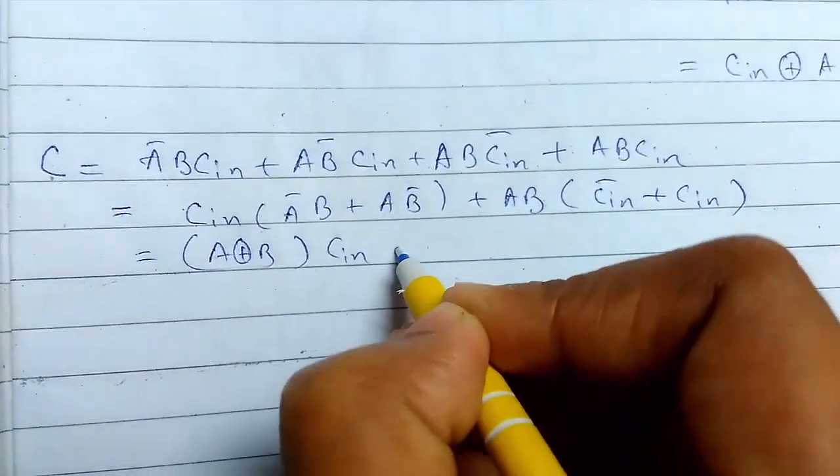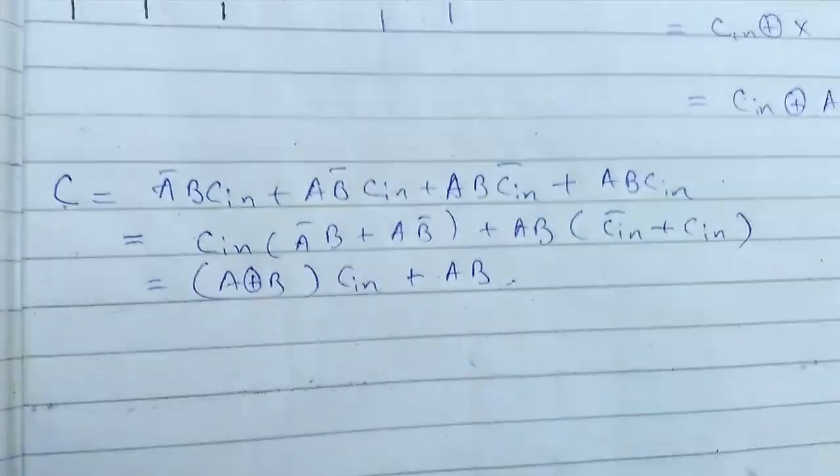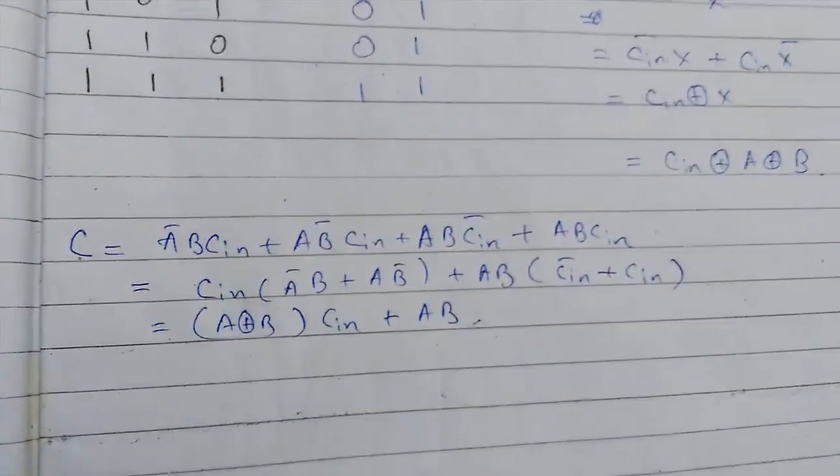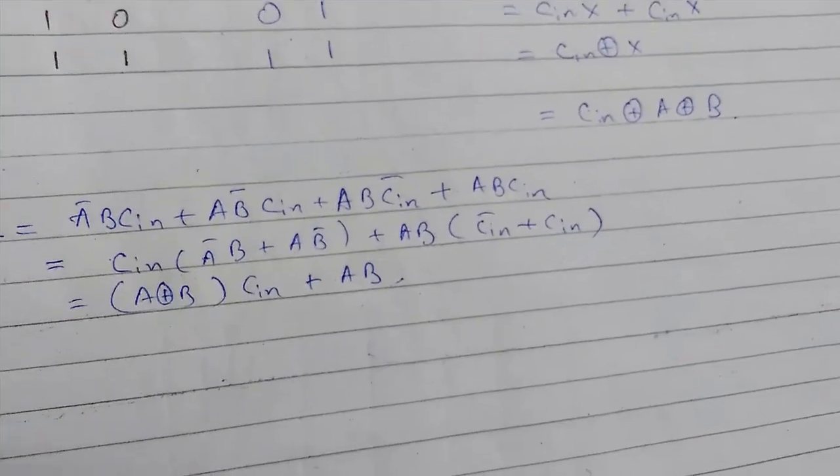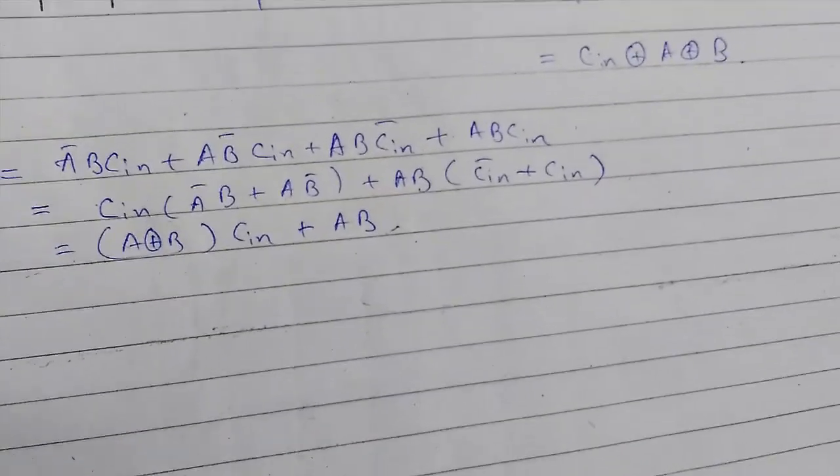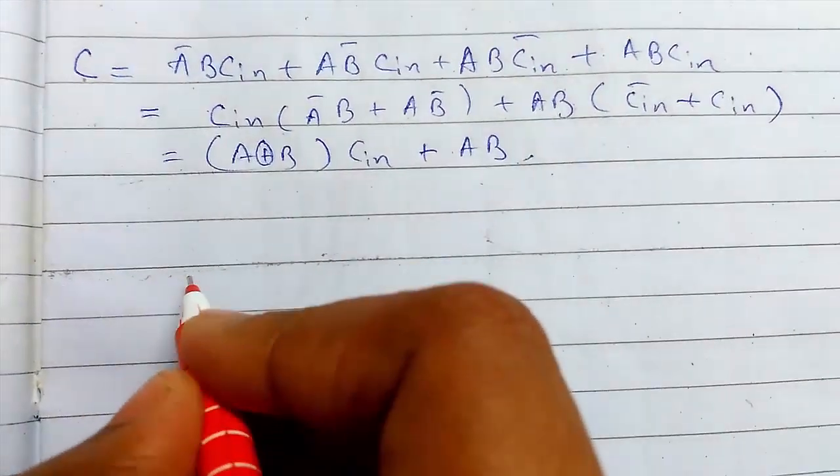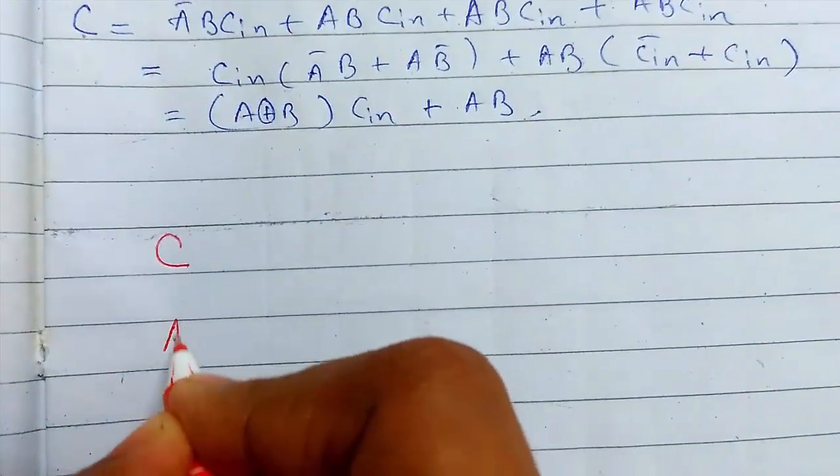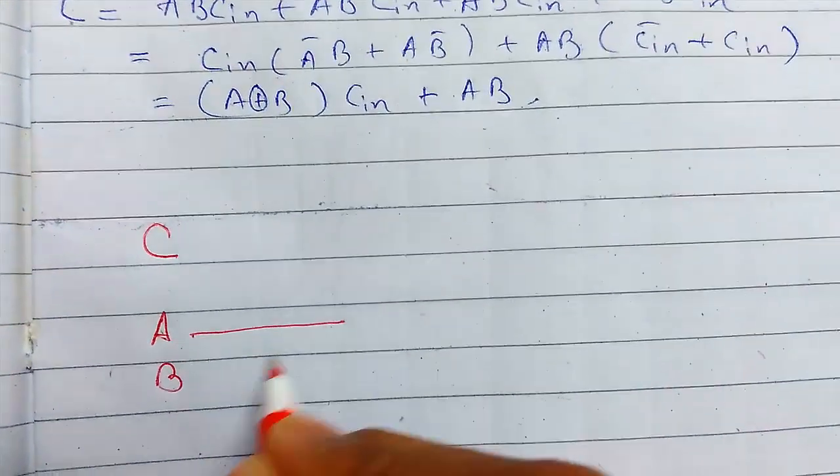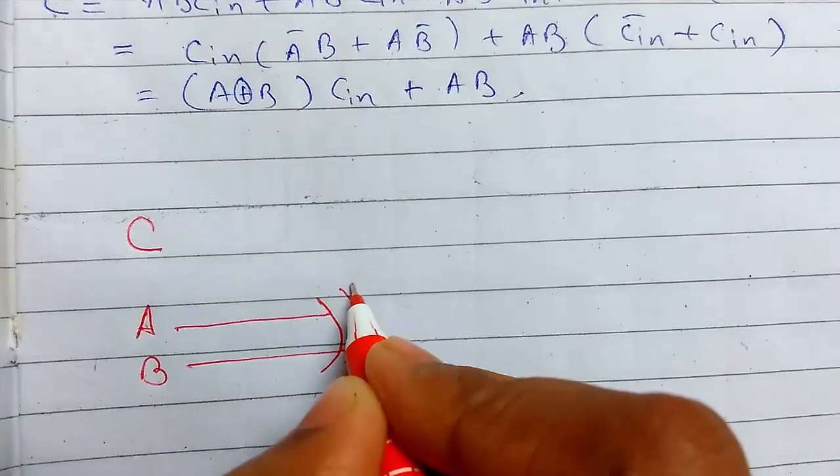And C-in, and this will be A B. So this was for carry out and this was for sum expression. Now we just need to draw the circuit for it. I'm drawing the circuit. This will be A, B.